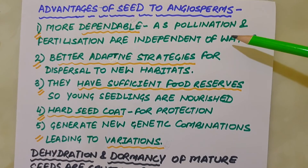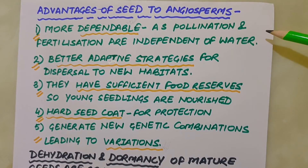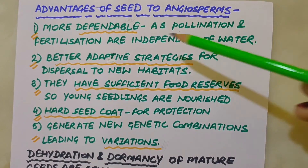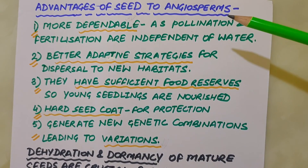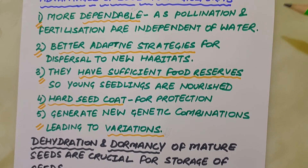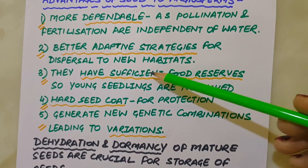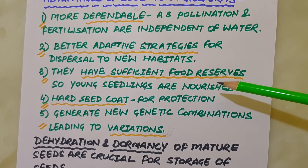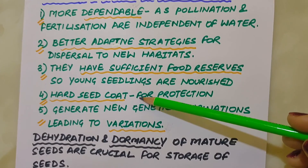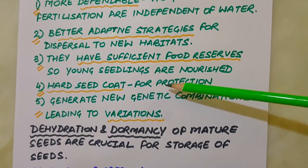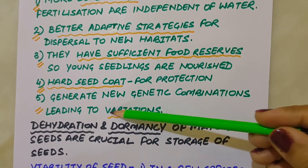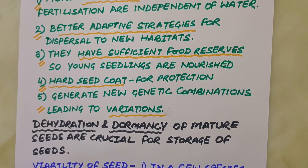Firstly, since reproductive processes such as pollination and fertilization are independent of water, seed formation is more reliable. Seeds also have better adaptive strategies for dispersal to new habitats, helping the species colonize other areas. As they have sufficient food reserves, young seedlings are nourished until they are capable of photosynthesis on their own. The hard seed coat provides protection to the young embryo. Being products of sexual reproduction, they generate new genetic combinations leading to variations. Seed is the basis of our agriculture.